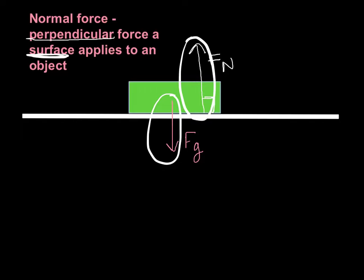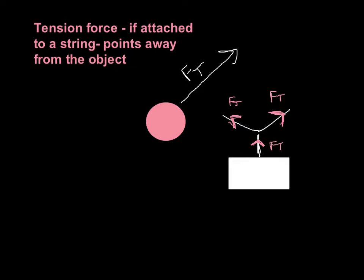Not all the time — keep that in the back of your mind, because when we start talking about ramps, it's going to be a little bit different. The tension force is if you're being pulled by a string, and it always goes away from the object. So if you're pulling a ball along, or you've got a mass hanging — like a picture hanging from a wall attached at one point — that force gets distributed amongst the others, but notice it's always pointing away from the object.